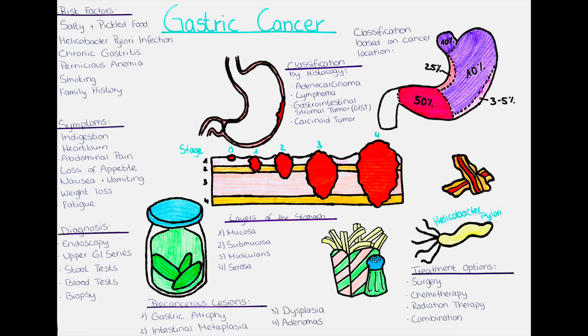In conclusion, gastric cancer is a type of cancer that develops in the lining of the stomach and is a significant public health problem worldwide. Although the exact cause is unknown, several risk factors have been identified. Symptoms may be non-specific, making early diagnosis challenging. Treatment options depend on the stage of the cancer, and the prognosis varies widely. Prevention involves reducing the identified risk factors and regular check-ups with a doctor. Thank you very much and hopefully see you again in the next video.